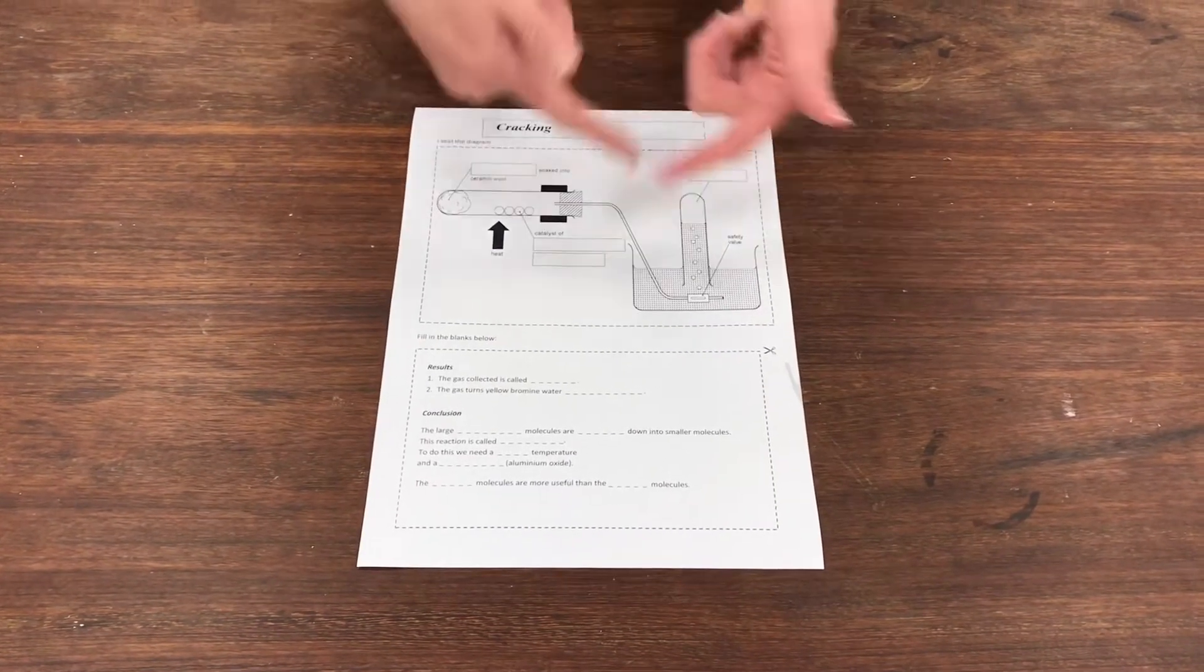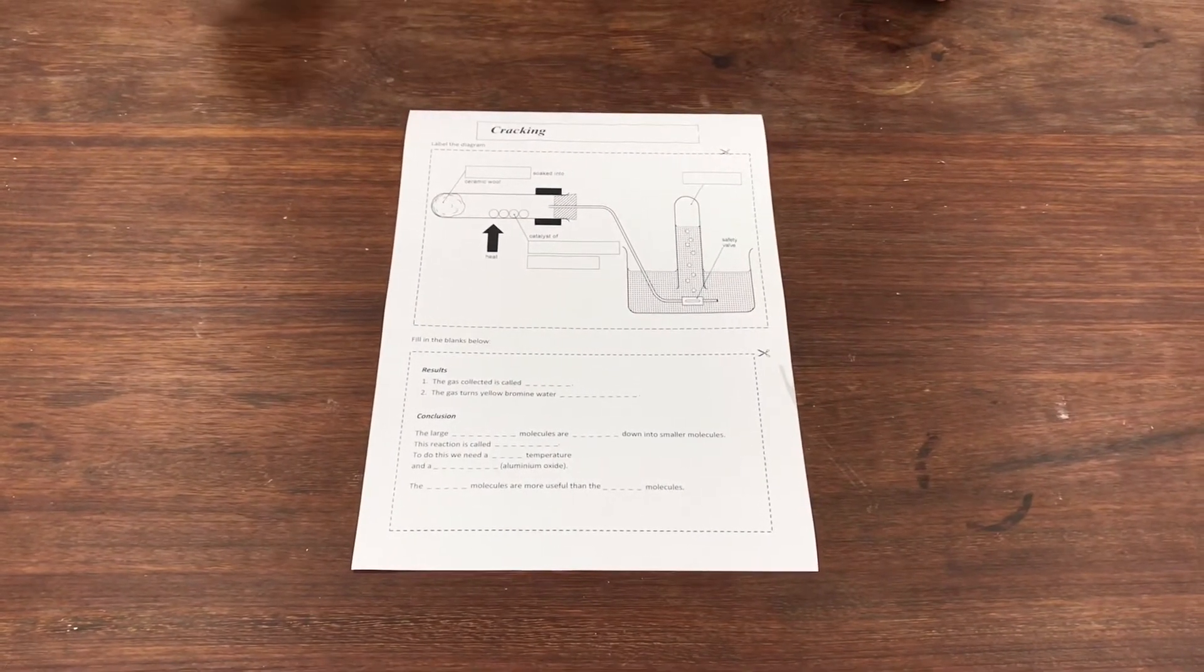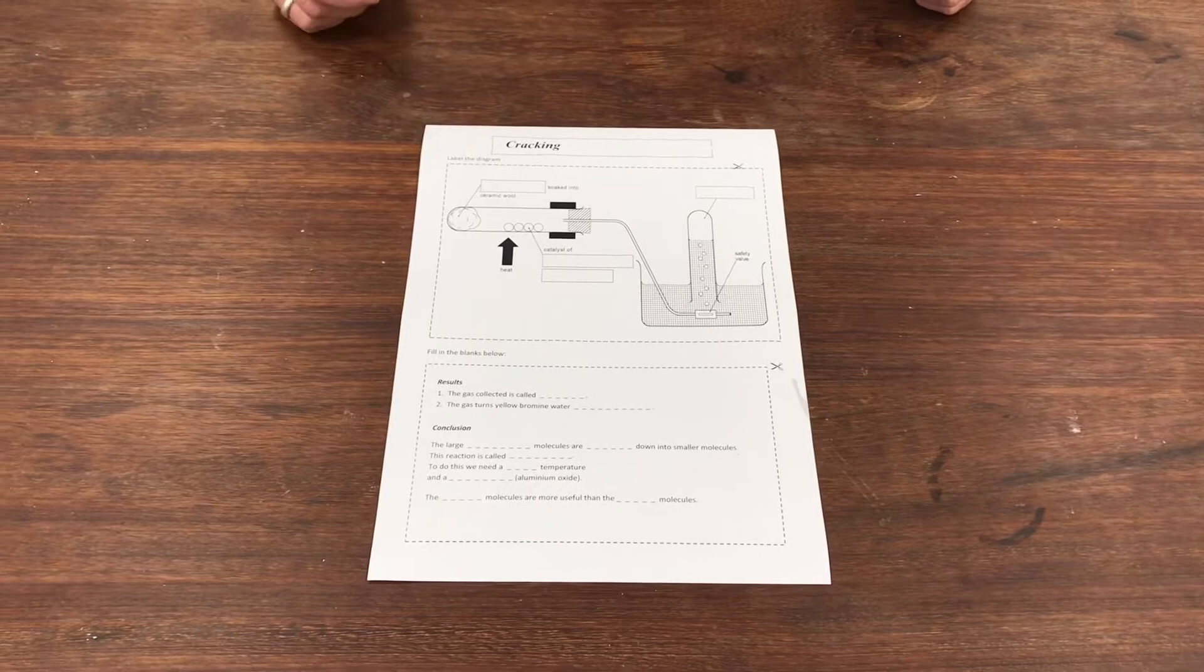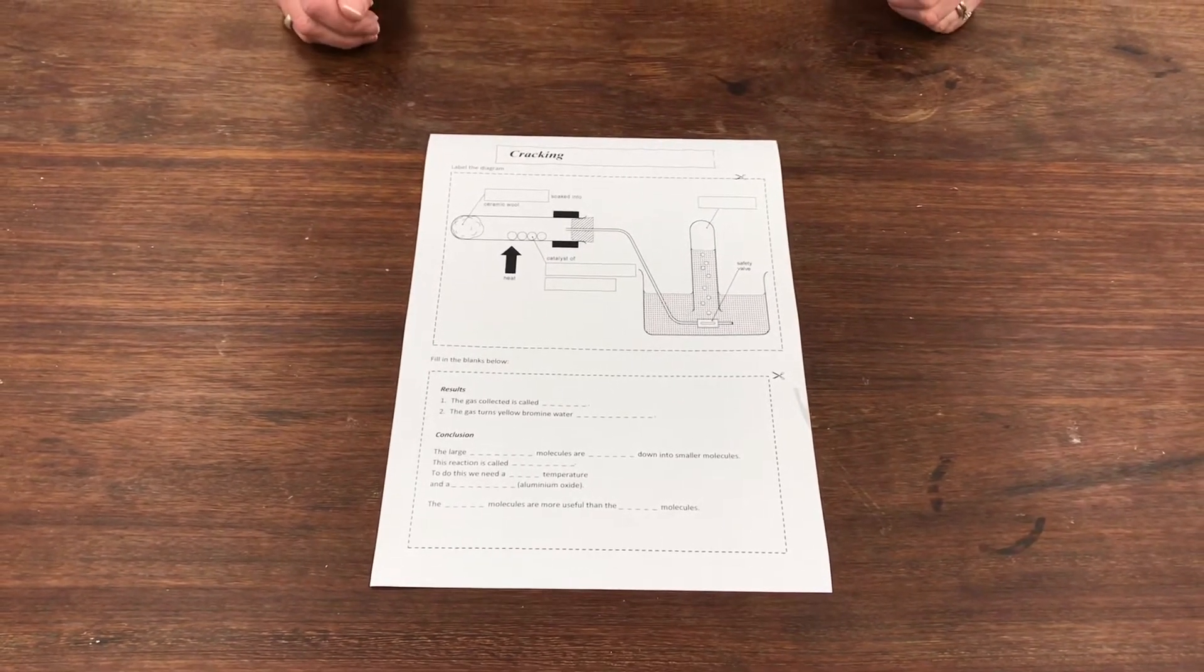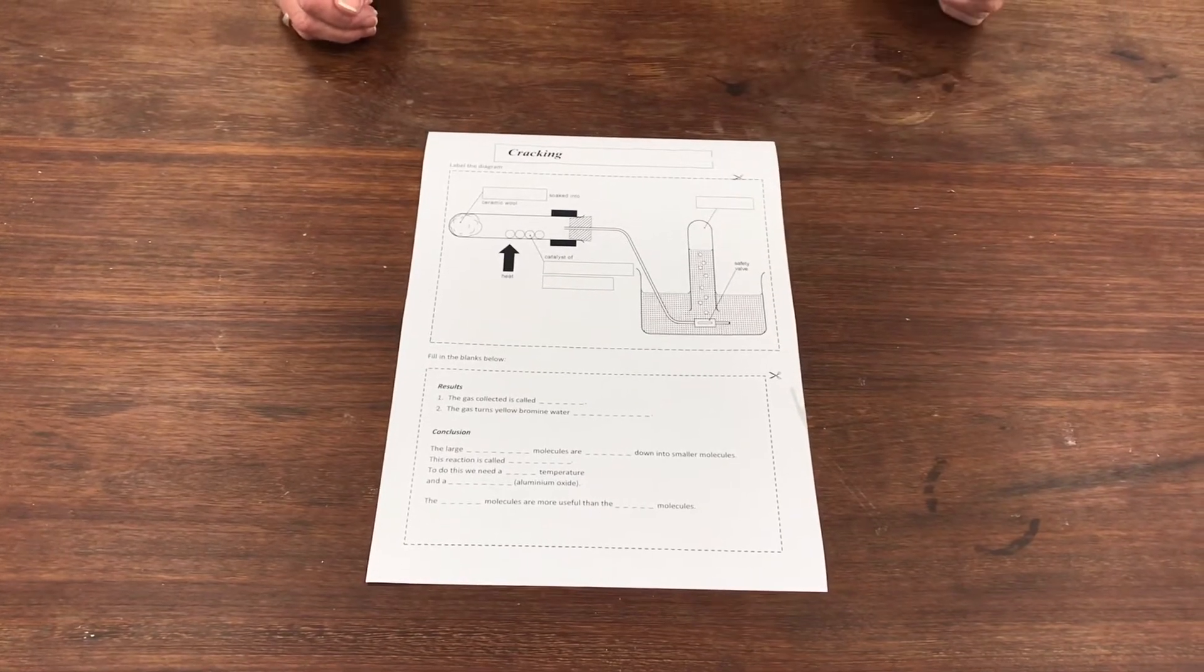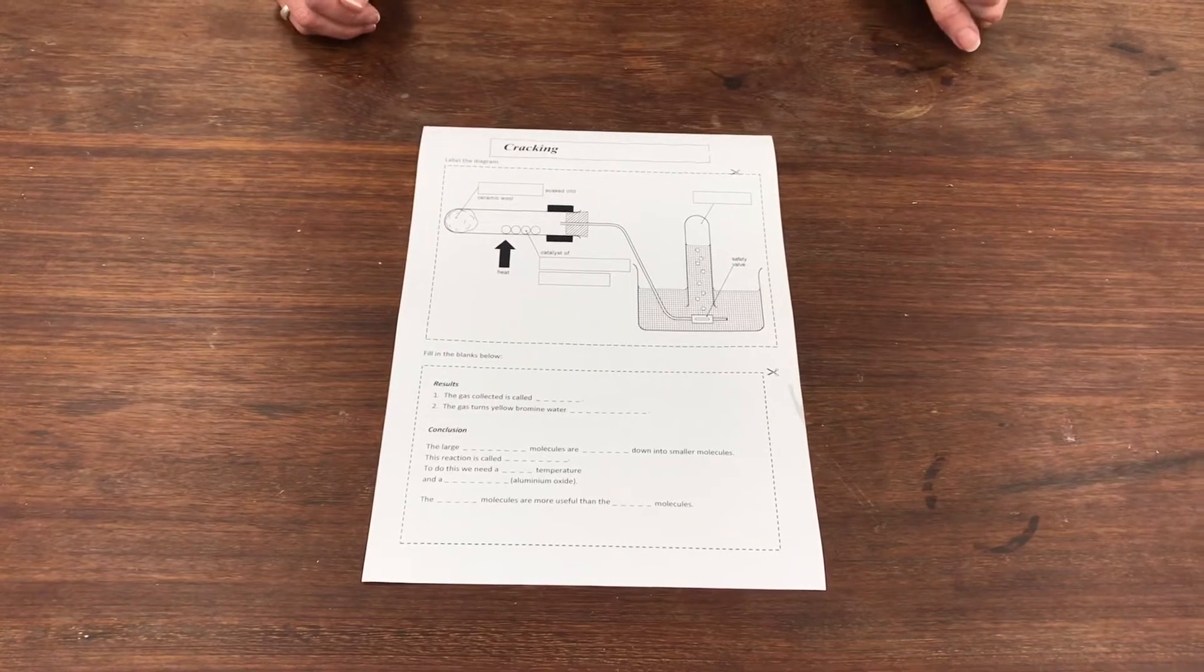and we react it using this sort of apparatus here. During the experiment the long alkane molecule is going to be broken up into smaller molecules, two different sorts of smaller molecules. We'll be collecting one of them in the test tube at the end of the apparatus and we can test that later to find out what kind of a molecule it is.